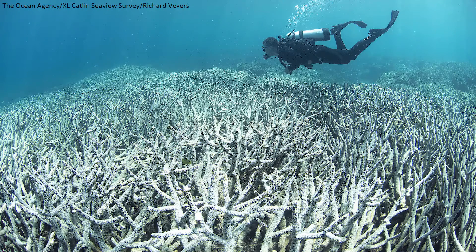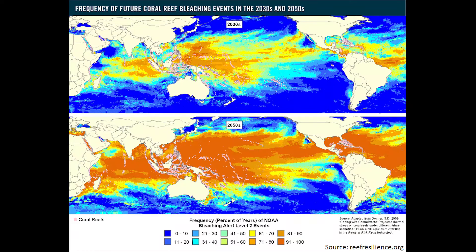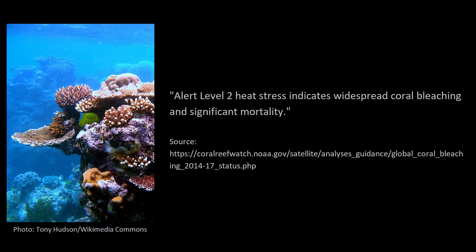Coral bleaching is not something that's just going to happen in one or two little unlucky locations around the globe. As we read in Global Climate Change, coral bleaching in conjunction with other factors, including the decrease in seawater pH, may cause irreparable damage to 40% of the reefs during the next few decades. Take a look at this map, which shows the projected frequency of coral bleaching events in the 2030s and 2050s. By the 2050s, a huge percentage of coral reefs worldwide are going to undergo level 2 bleaching events during 90 to 100% of years. NOAA defines level 2 bleaching events as: alert level 2 heat stress indicates widespread coral bleaching and significant mortality.